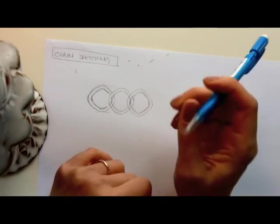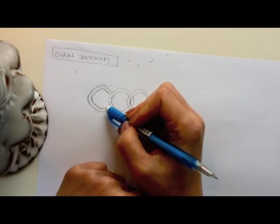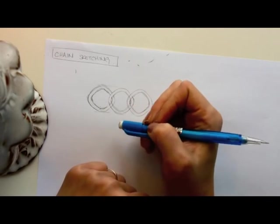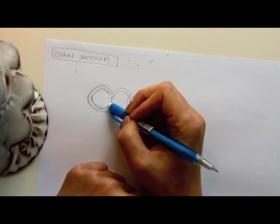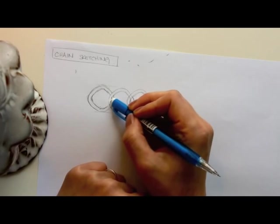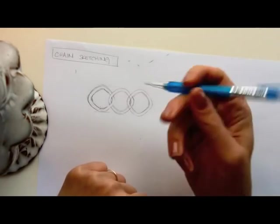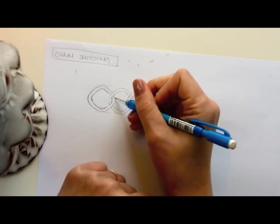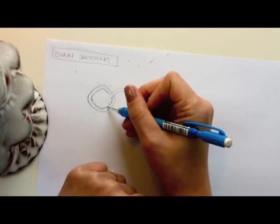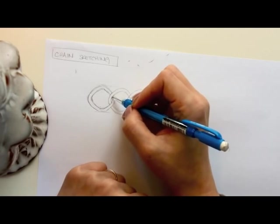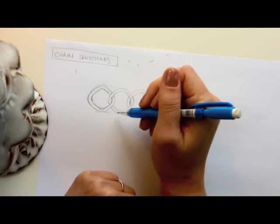Now if ring one is going over the top of ring two down here, then I erase ring two lines. Okay, so you can already see it's coming together. You can tell that something's happening where they're interlocked.